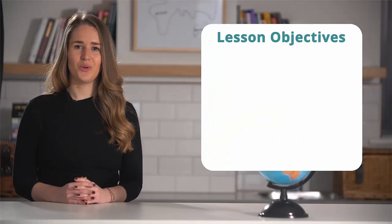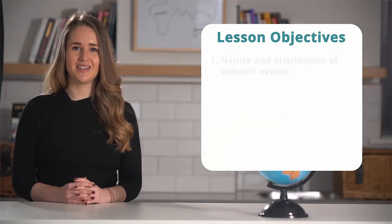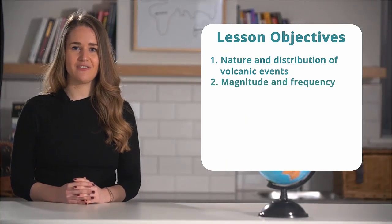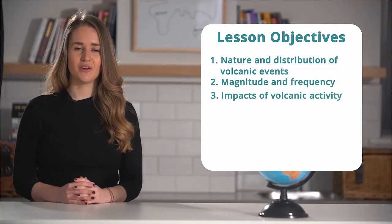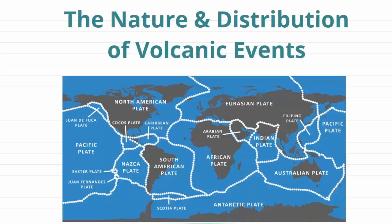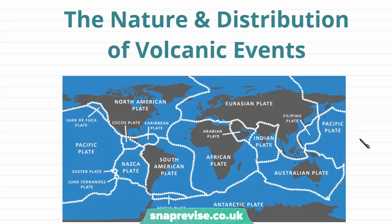Hi guys, in this video we will be understanding the nature and distribution of volcanic events, their magnitude and frequency, and the impacts of volcanic activity. To begin with, we're going to look at the nature and distribution of volcanic events. In the previous video we learned about the theory of plate tectonics and plate boundaries, and most volcanic activity occurs at plate margins through tectonic processes.